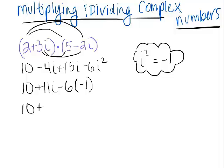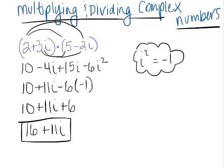So negative 6i squared becomes negative 6 times negative 1 because i squared is negative 1. Notice we now have 10 plus 11i plus 6. Negative 6 times negative 1 gives us a positive 6. We can now combine the real parts to get 16, and the imaginary part is 11i. So we simplified our two complex numbers that we multiplied to get 16 plus 11i.